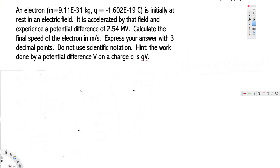Let's look at this problem. The question asks: an electron is initially at rest in an electric field, it is accelerated by that field and experiences a potential difference of 2.54 mega volts. Calculate the final speed of the electron in meters per second.